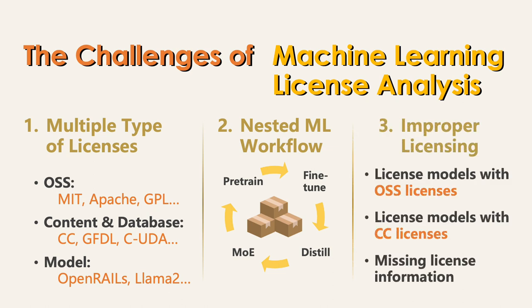The final challenge lies in the prevalence of improper licensing in current machine learning projects. Due to a lack of consensus in licensing, many models opt for software licenses or content licenses that simply match their code or dataset, which is not suitable for the machine learning scenario. It becomes challenging to find matching terms for ML activities such as training and distillation. Additionally, many machine learning projects do not declare license information, further increasing the ambiguity for license analysis.